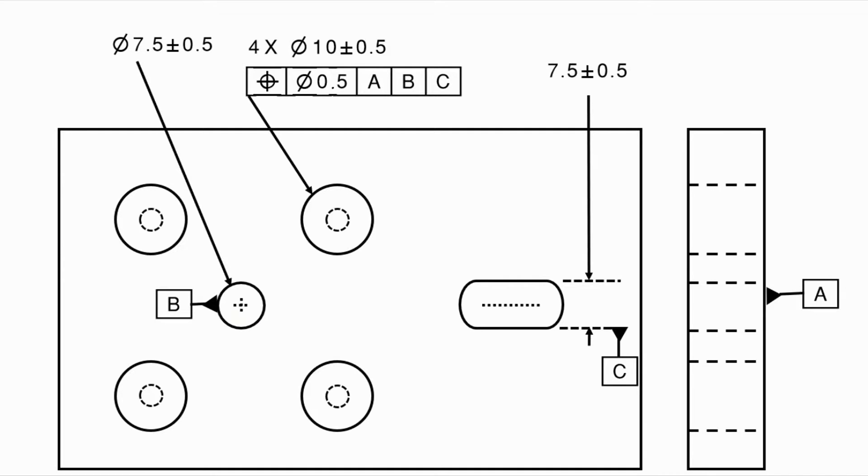So what does it mean? We have this tolerance zone of 0.05. So that means the center of these measurements need to lie within these. Datum B needs to be right on target.